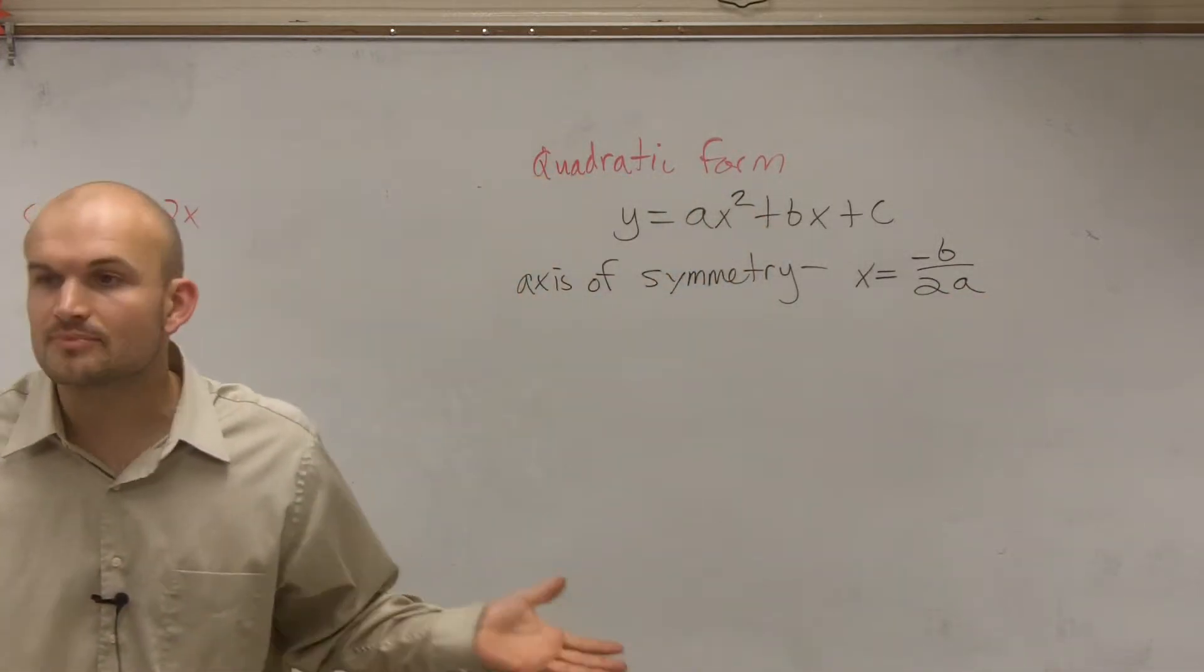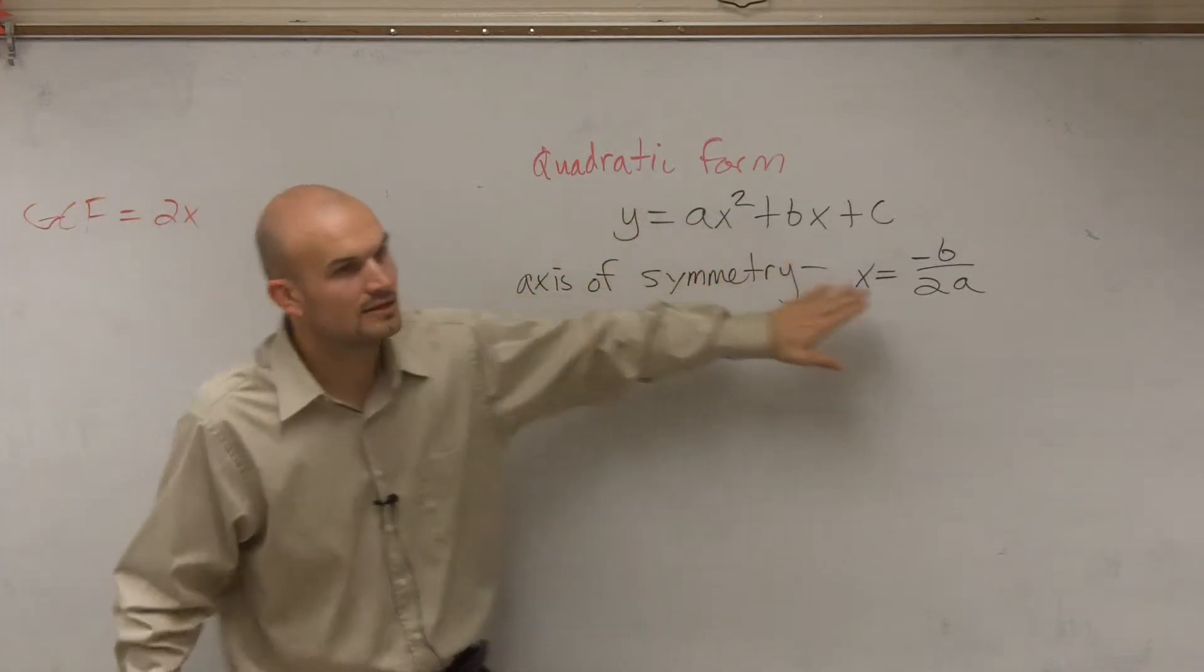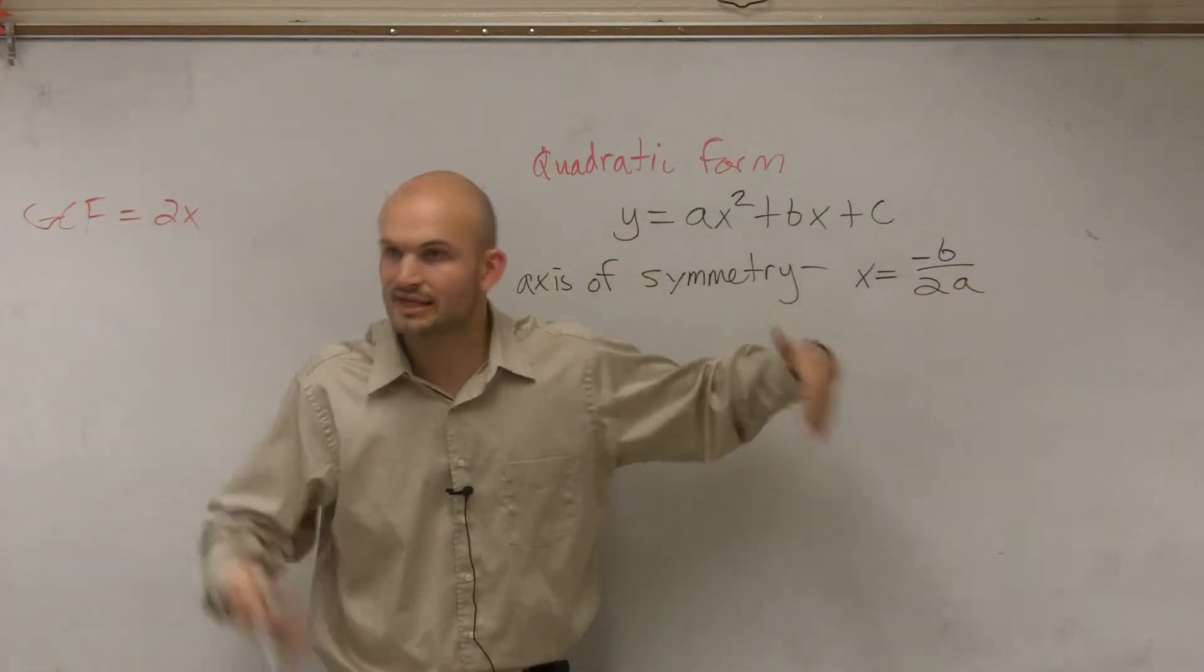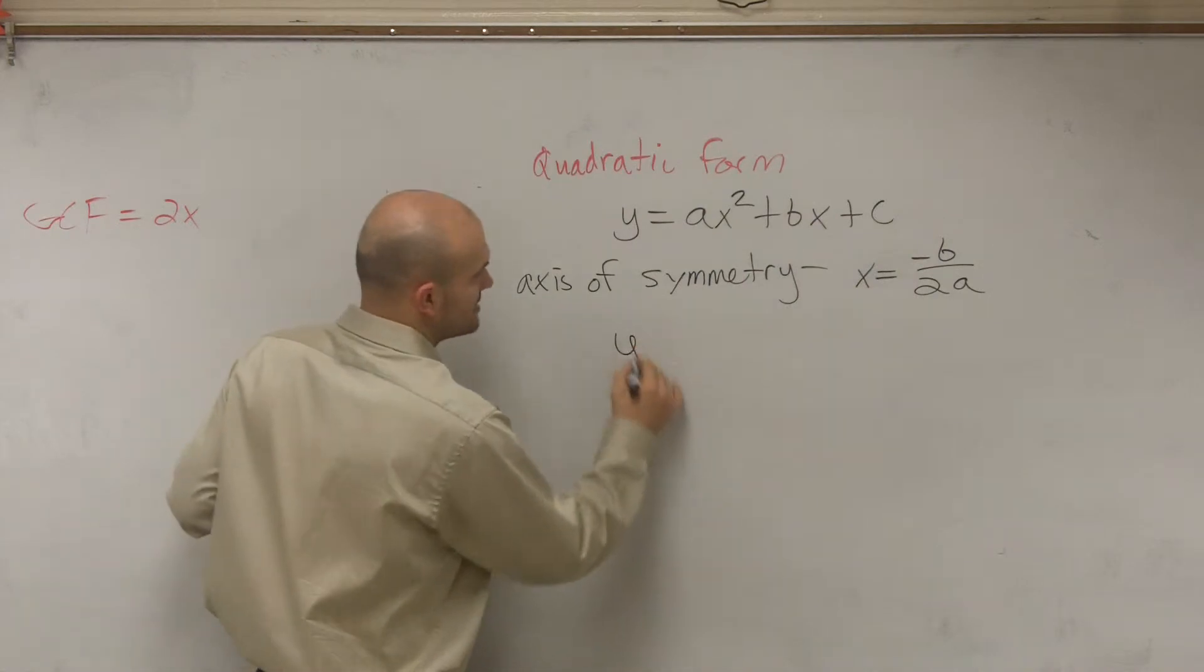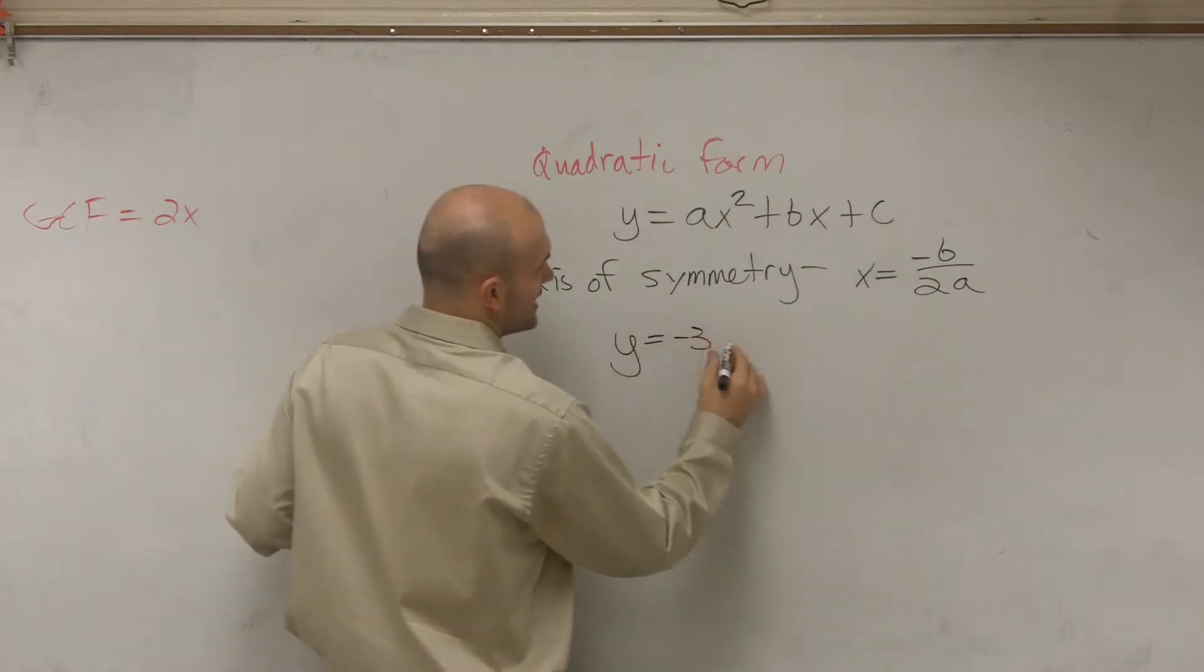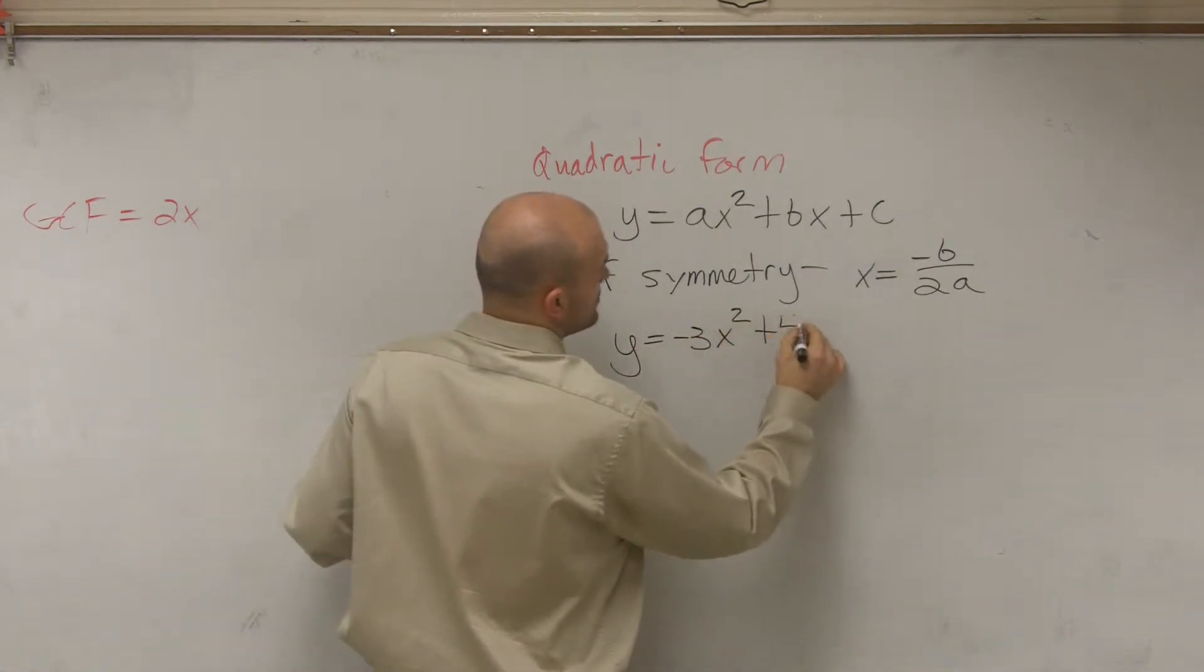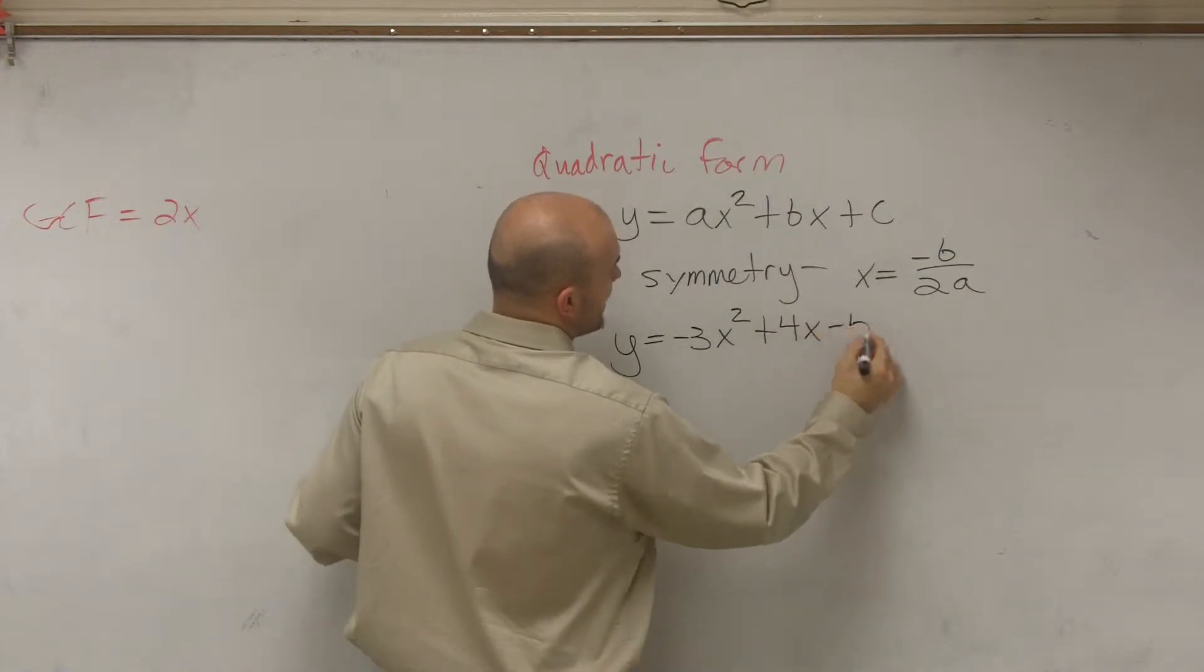So all we're simply going to do is just evaluate this equation for our a, b, and c. So let's take a look at a quick example. Let's say I give you an equation: negative 3x squared plus 4x minus 5.